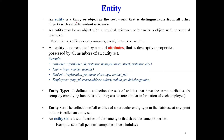An entity is a thing or object in the real world that is distinguishable from other objects with an independent existence. Each object or entity has particular attributes. An entity is represented by a set of attributes or descriptive properties. For example, if customer is an entity, then it has customer ID, customer name, customer street, city, phone number, and email address. Similarly, if loan is an entity, it has loan number and amount. If student is an entity, it has registration number, name, class, age, contact number, and address.